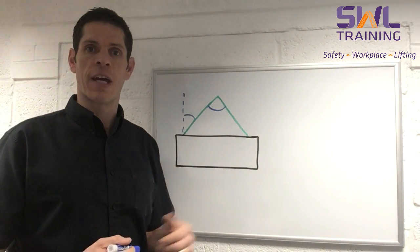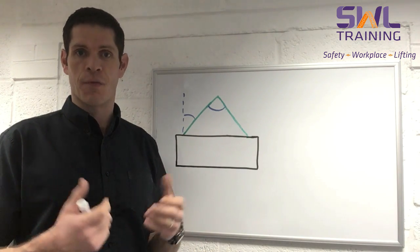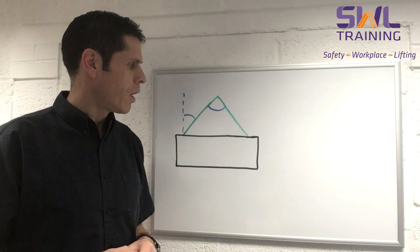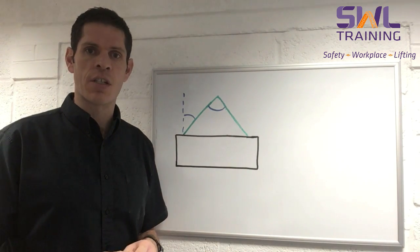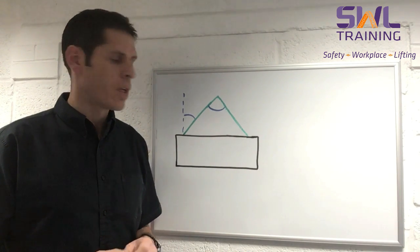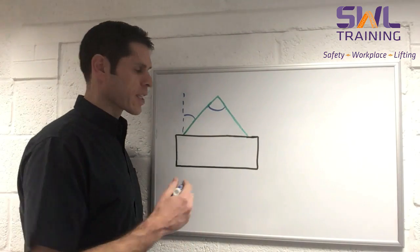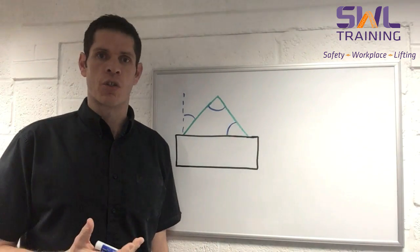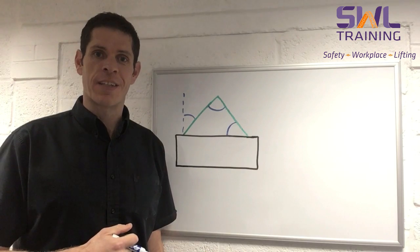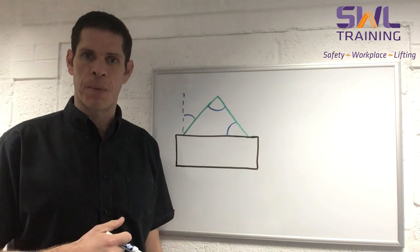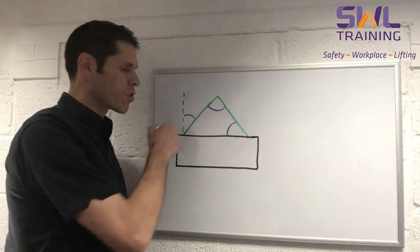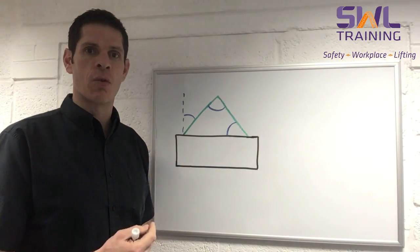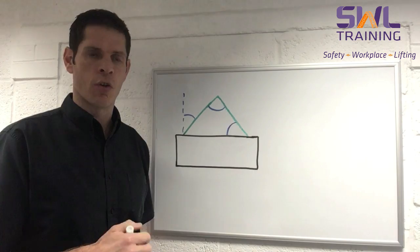Now, for those of you watching in the United States and Canada, first of all, welcome and thank you. And indeed any other countries that adopt similar standards, you'll find that your beta angle is taken from the horizontal. So just to avoid any transatlantic confusion when I'm talking about the beta angle, we're going to be referring to the angle from the vertical. That's what we use in the UK and Europe.